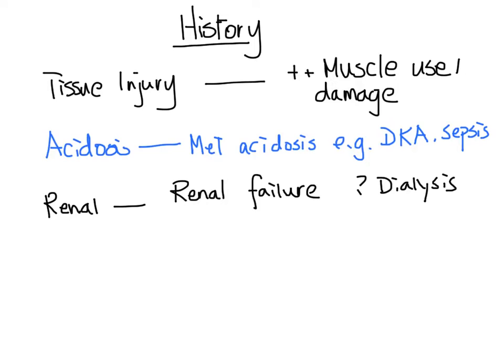For medication, we need to ask about new medications. Specifically ACE inhibitor, angiotensin 2 receptor blockers, and spironolactone. These are the main history items we want to ask.